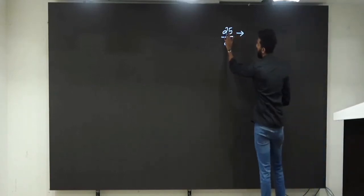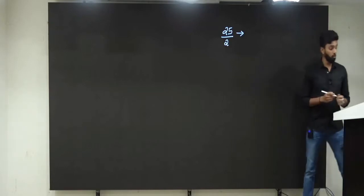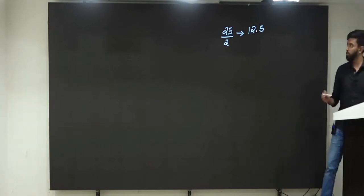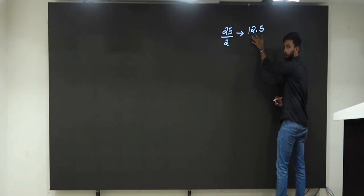If I say divide 25 by 2, what will you tell me is the output? 12.5, very good, yes or no? Which means if I divide 25 by 2, the quotient is 12.5, very good.